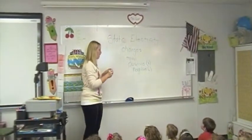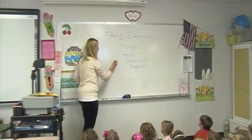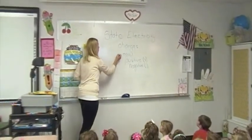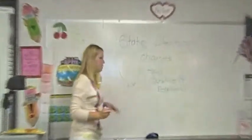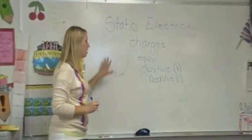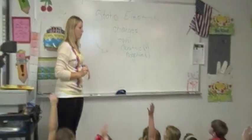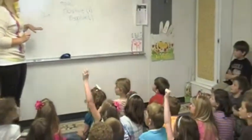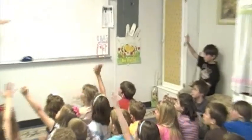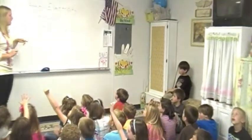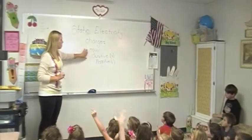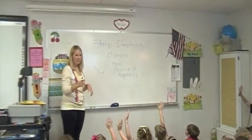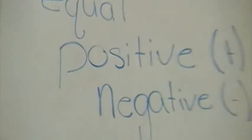Now let's think about a balloon. We have a balloon that looks like this. And since everything has charges in it, we have a balloon — what do you think is going to be in that balloon? Static electricity, but what did we talk about is in everything? Charges. So we have to have in this balloon both positive and negative charges.